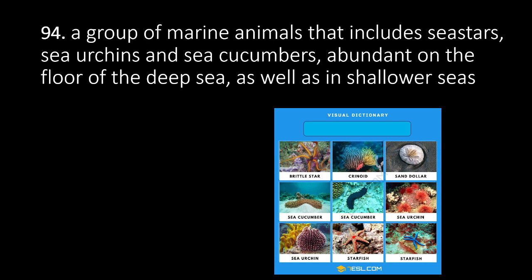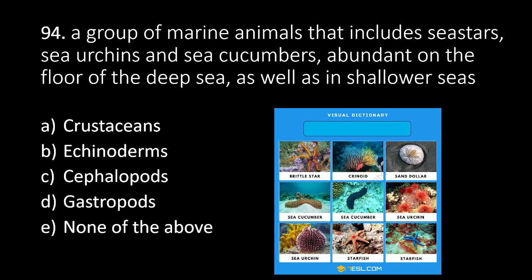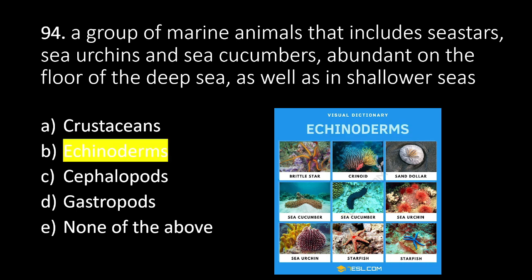Number 94: a group of marine animals that include sea stars, sea urchins, and sea cucumbers, abundant on the floor of the deep sea as well as in shallow areas. A. Crustaceans, B. Echinoderms, C. Cephalopods, D. Gastropods, E. None of the above. The answer is B. Echinoderms.